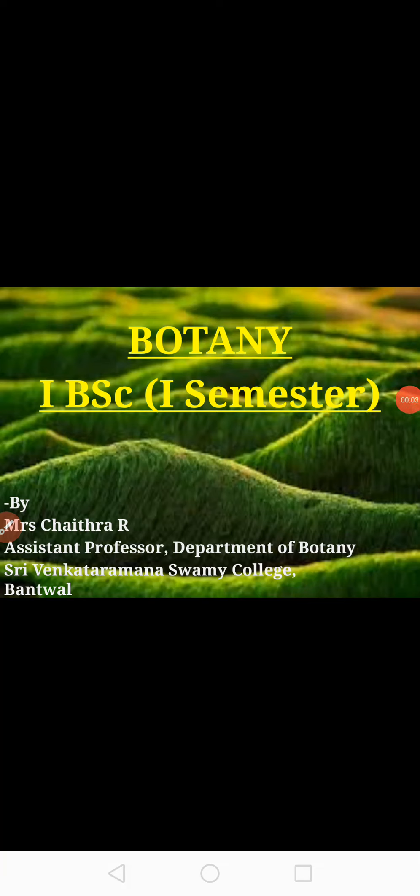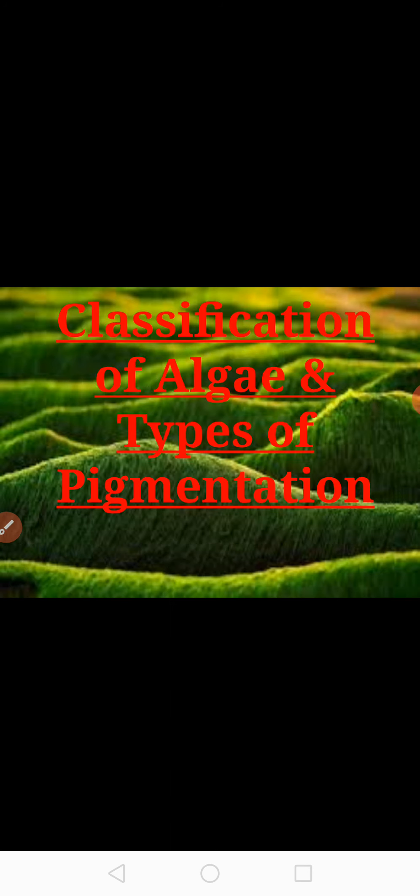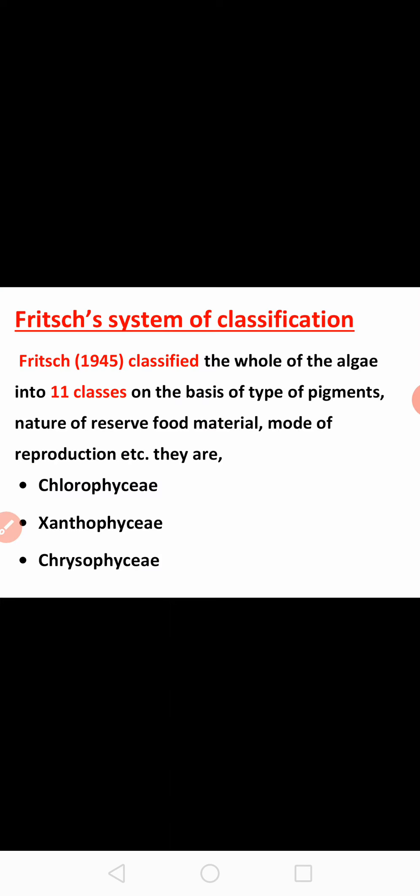Hello dear students, welcome to the botany class. Today's topic is classification of algae and types of pigmentation. In the year 1945, Fritz classified the algae into 11 classes on the basis of types of pigments, nature of reserve food materials, and mode of reproduction. This system is also called the Fritz system of classification.